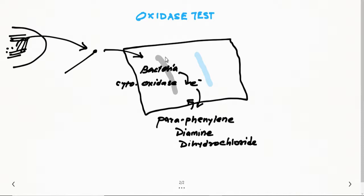The bacteria will act as an electron donor and the dye will act as an electron acceptor. Due to this reaction, a compound is formed known as indophenol blue. This compound is blue in color.